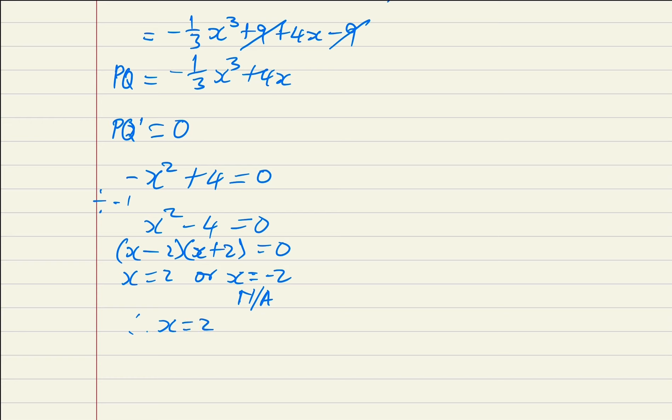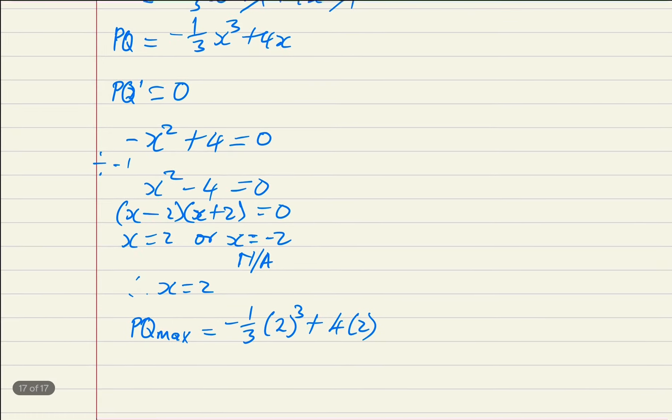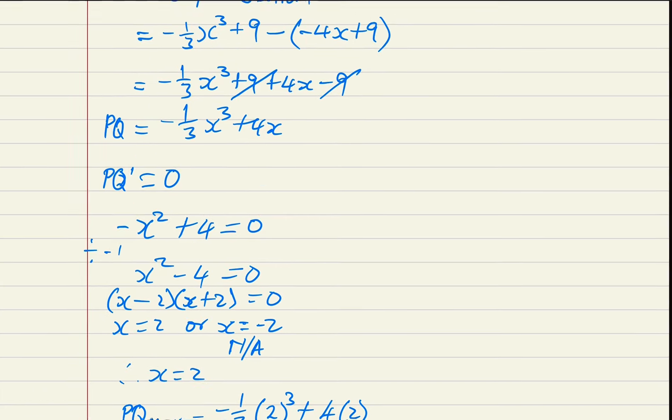So, having 2, then we take 2 and substitute it into PQ. Therefore, PQ max will be -1/3 × 2³ + 4 × 2. Let's check: this will be 2³, plus 4 × 2. Yes, that's what we are having.